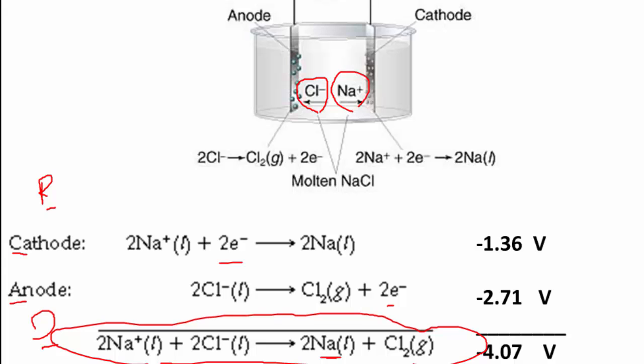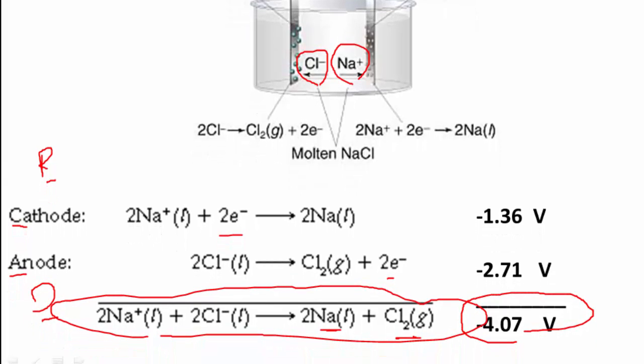These are the values, and this would be the amount of energy that would need to be applied — you need to sum those two values together. Notice, once again, you have a negative E cell.